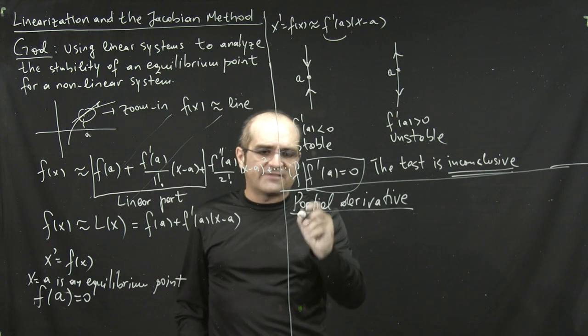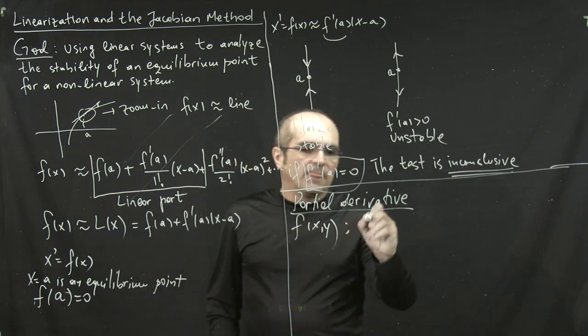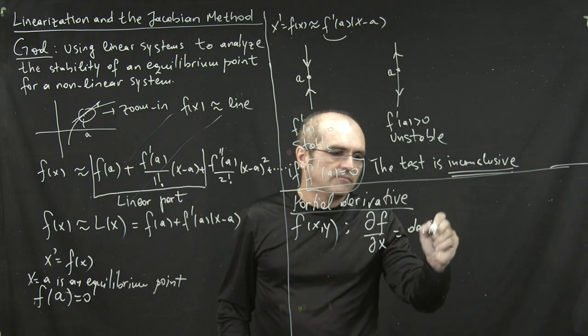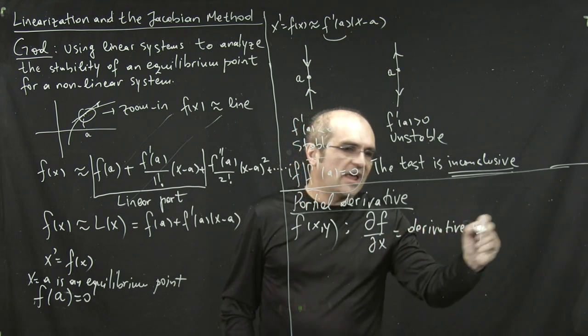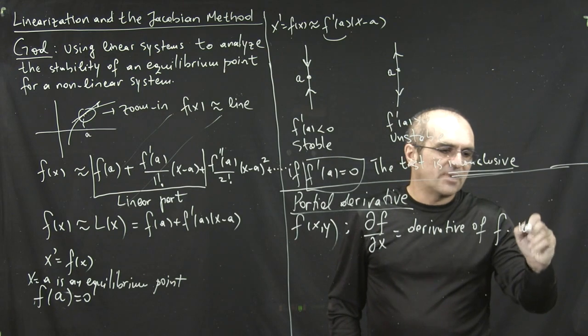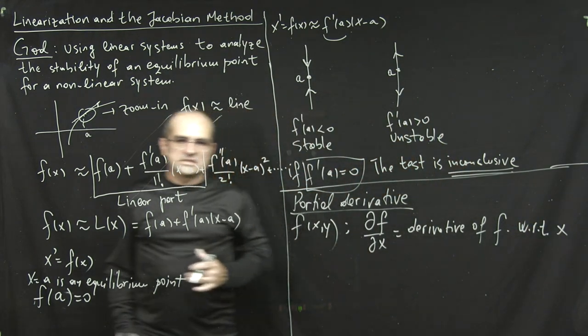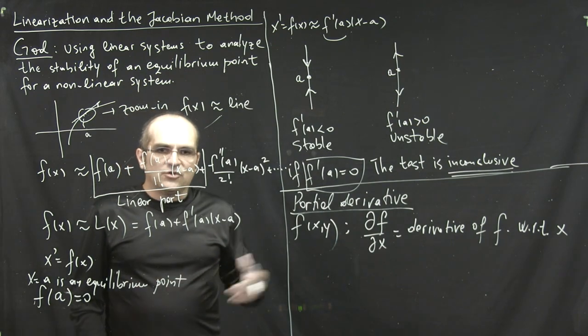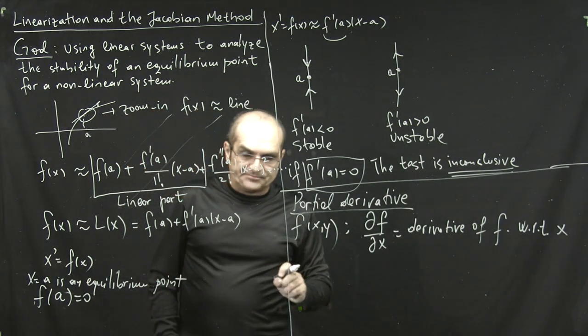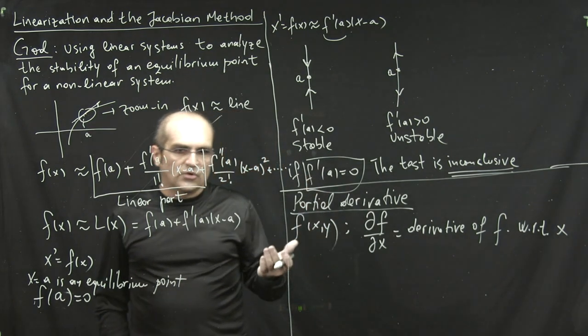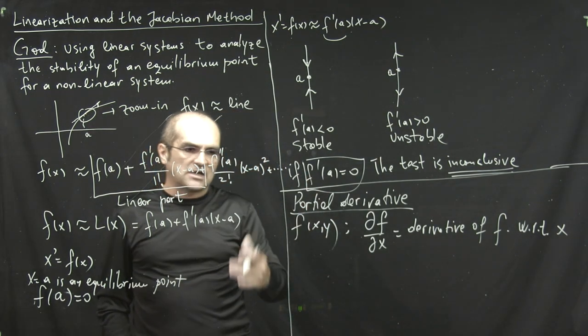if you have a function of several variables, this symbol, partial f, partial x, means the derivative of f with respect to x. So, basically, you focus on one variable at a time, and you treat the other variable as a constant. That's all there is to it. It's just all the derivative formulas that you know, but keeping one variable as a constant at a time. So,